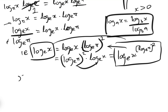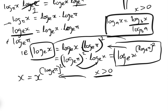Taking inverse logs, we have x equals x to the power of the constant log_e(pi squared). Remember that log_e(pi squared) is just a constant. The only solution to this, knowing that x is greater than 0, which we've already established, is x equals 1.